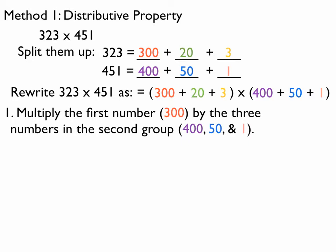So, the first thing I'm going to do is multiply the first number by the three numbers in the second group. My first number is 300, and the three numbers in the second group are 400, 50, and 1. So, 300 times 400 is 120,000. 300 times 50 is 15,000. And 300 times 1 is just 300.